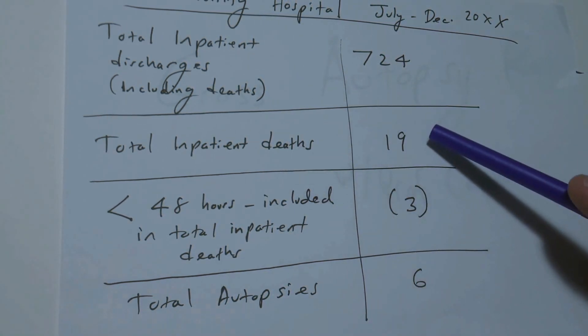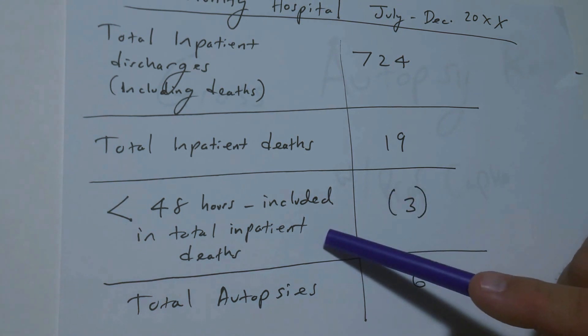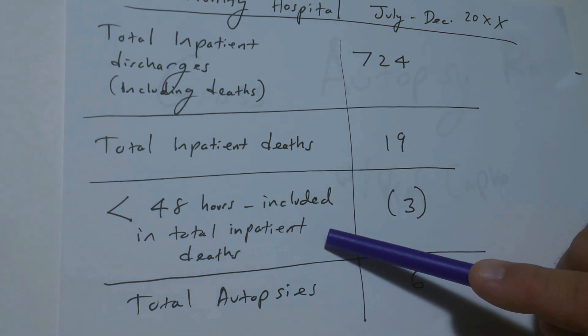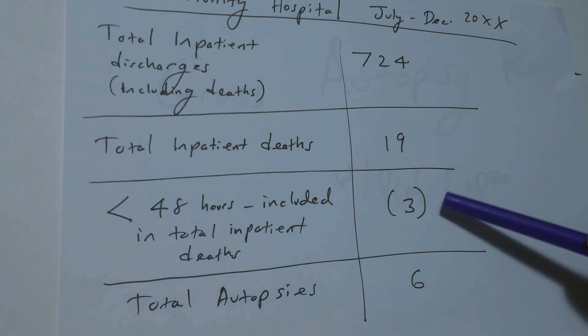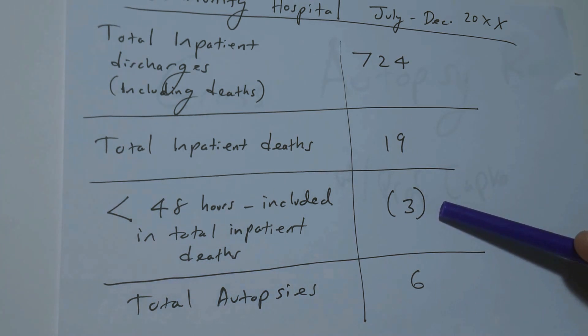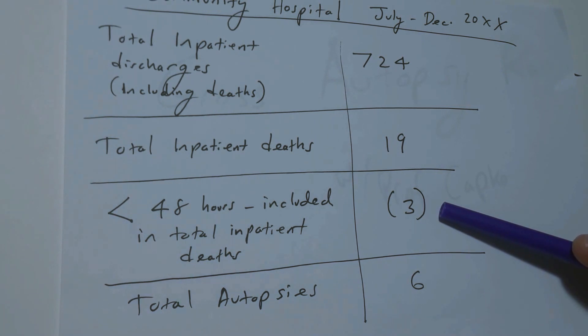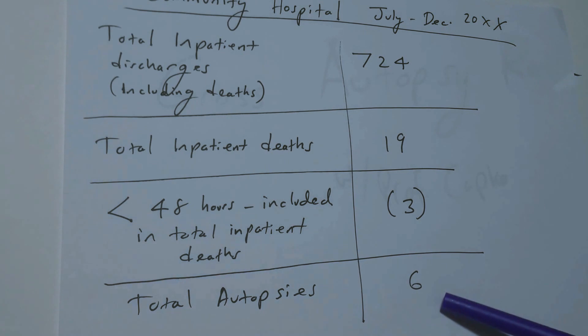Total inpatient deaths of 19, less than 48 hours included in the total inpatient deaths. So it includes these in the 19 and it's 3 and it's got parentheses around it because that means negative, so we'd subtract it from the 19. And total autopsies is 6.